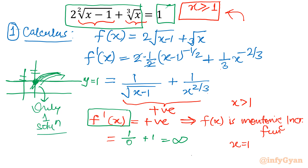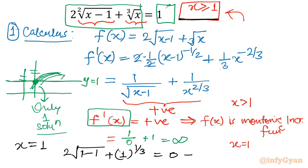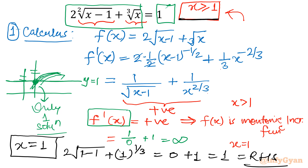Now how will we find it? Let me use a check-and-error method. I will put x = 1 directly because our domain starts from x = 1. So 2√(1−1) + 1^(1/3) = 0 + 1 = 1, which is our RHS. That means the only solution is x = 1. This is using calculus.